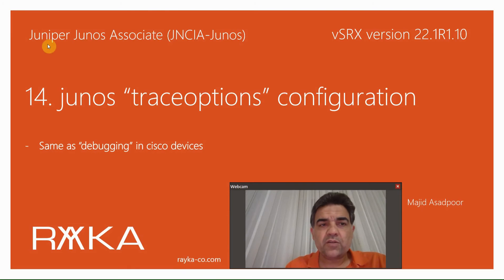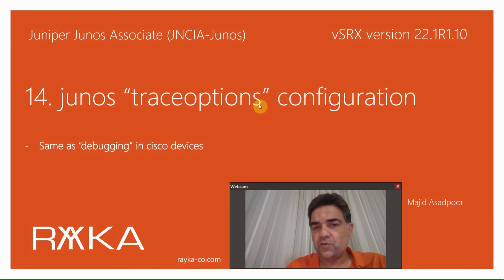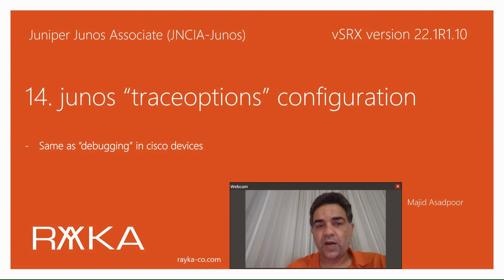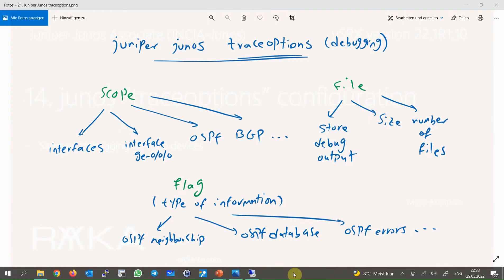Welcome to another video of Juniper Juno's associate course. In this video I'm going to talk about Juniper's trace options. Trace options is like a debugging tool in Cisco and many other vendors. With trace options you can monitor device background processes or traffic flow to and from Juniper devices. Trace options can be limited to a specific scope such as all interfaces or a specific interface, routing protocols such as OSPF, BGP, and many other contexts.